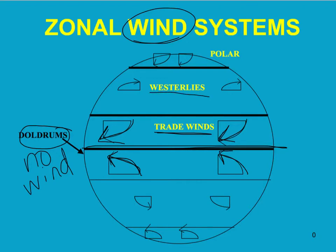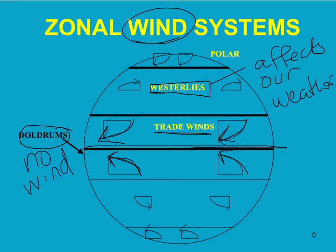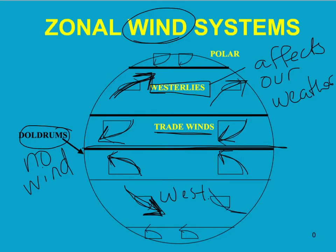Just north of the trade winds, we have what are called the Westerlies. These are what affect our weather. They're called the Westerlies because they come from the west and move east. The same is true in the southern hemisphere — also called the Westerlies, they move from the west towards the east, away from the equator towards the poles, just like in the northern hemisphere.